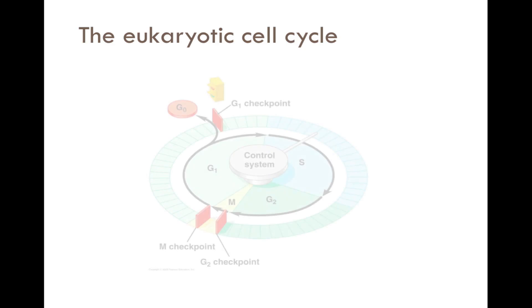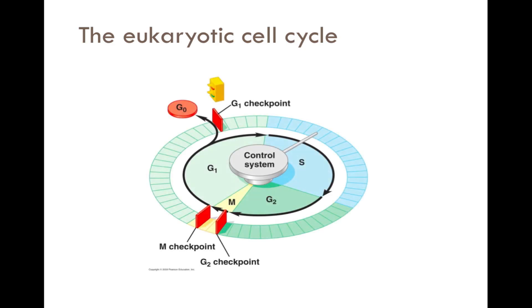The eukaryotic cell cycle is analogous to a control system. Growth factors and checkpoints regulate the cell cycle. Checkpoints are located in the G1 phase, the G2 phase, and the last checkpoint is in the mitotic phase. Most people would consider the G1 checkpoint to be the most important, because when the cell continues past the G1 checkpoint, 90% of the time the cell will complete the cell cycle. When the cell is stopped at the G1 checkpoint, the cell will enter a dormant stage called G0.